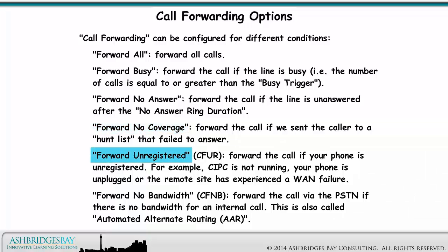Forward unregistered, also called CFIR: forward the call if your phone is unregistered — for example, CIPC is not running, a phone is unplugged, or the remote site has experienced a WAN failure. And forward no bandwidth: forward the call via the PSTN if there is no bandwidth for an internal call. This is also called automated alternate routing, or AAR.